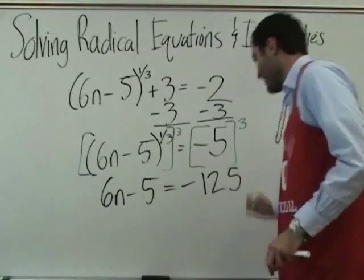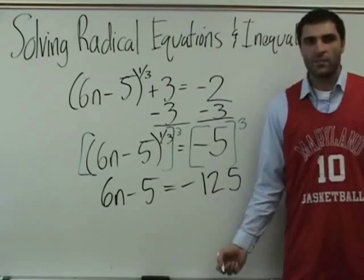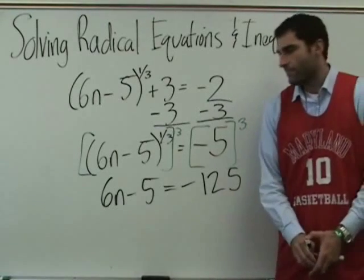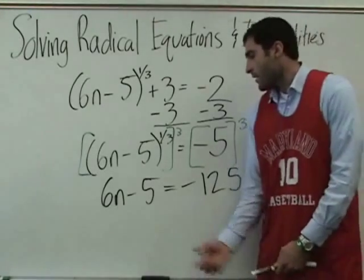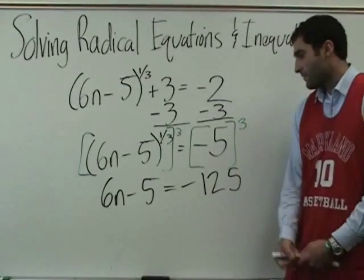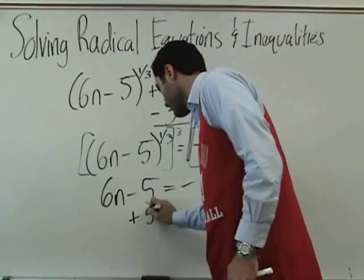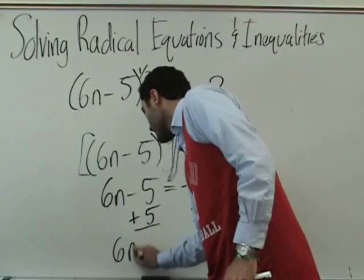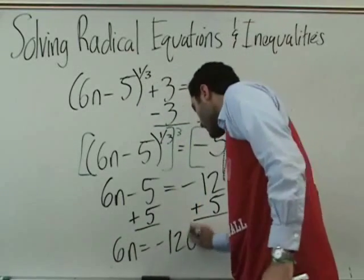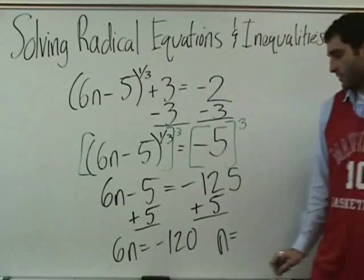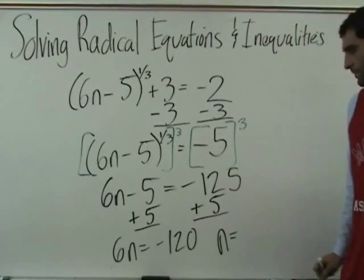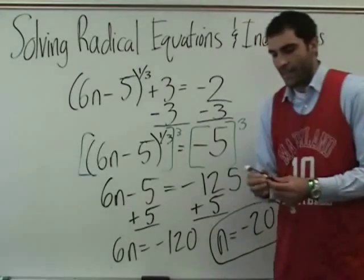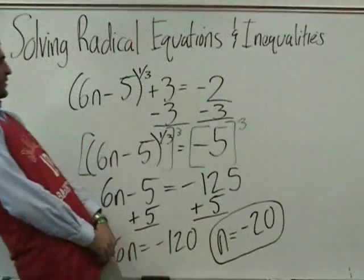I wrote negative 125. Objections? No. Negative 5 cubed is negative 125. 25 times another negative 5. Okay, good job. Here we go. Add 5. 6n is negative 120. 6n divided by 6. N equals negative 20. Now we've got to plug it back in.